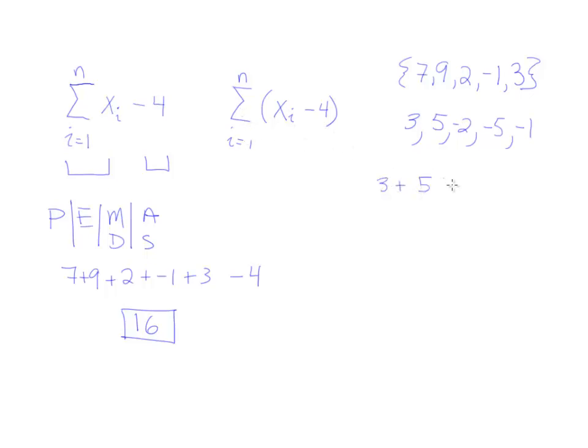So we'll literally have 3 plus 5 plus negative 2 plus negative 5 plus negative 1. And when we're finished with that, we'll have our answer. So 3 plus 5 is 8. Take away 2 is 6. Take away 5 gives you 1. And take away 1, you end up with 0 as your final answer for this summation here.